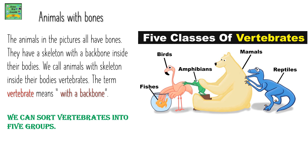There are five classes of vertebrates — animals with bones. The animals in the picture all have bones. They have a skeleton with a backbone inside their bodies. We call animals with a skeleton inside their bodies vertebrates. The term vertebrate means 'with a backbone.' We can sort vertebrates into five groups.